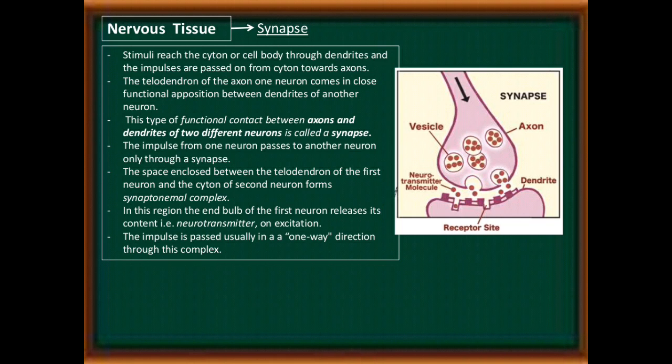Now see the structure of synapse. Stimuli reach the cytone or cell body through dendrites, and impulses are passed from the cytone towards the axon. The telodendrons of the axon of one neuron come in close functional opposition with the dendrites of another neuron. This type of functional contact between axons and dendrites of two different neurons is called a synapse. The impulse from one neuron passes to another neuron only through a synapse.